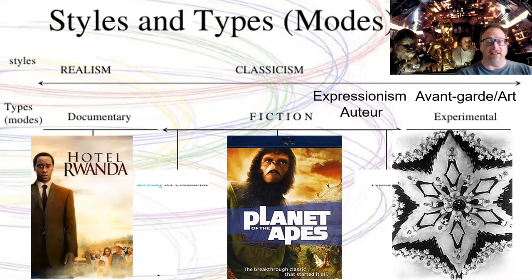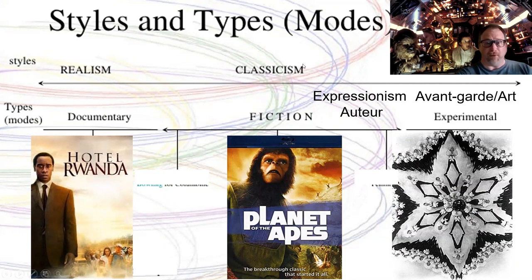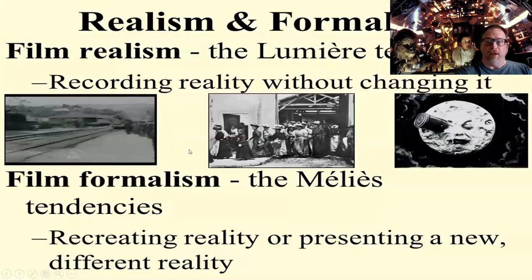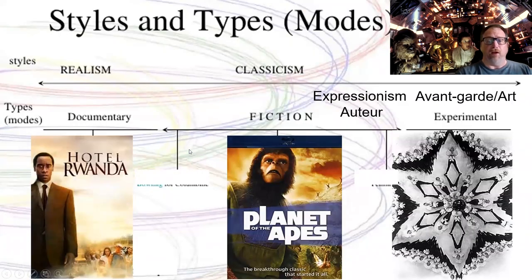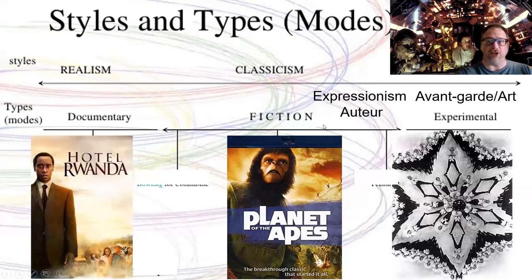Right in the middle is classicism — the Hollywood style of making films, largely for an entertainment function, but there are almost always different variations of stories. So even when a realist film starts to tell a story, as it shies away from documentary, for example historical narration based upon reality without a lot of fact-checking, we move more and more to classicism. Almost all films you know are basically somewhere in this central range.